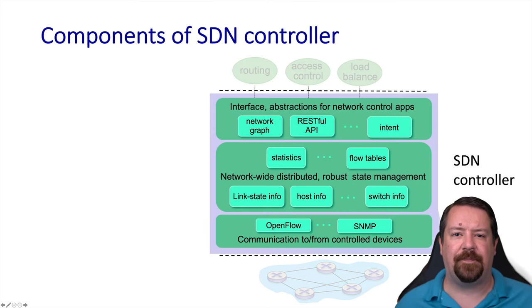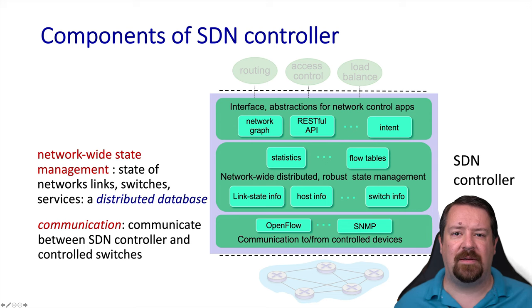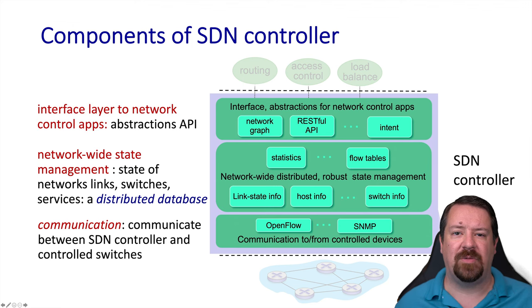Let's break down the SDN controller in more detail. In general there will be modularity and a set of concerns the controller must deal with. The controller will have components dedicated to communicating with switch devices, for example using the OpenFlow protocol and possibly the SNMP protocol as well. The controller also needs to track network state — what physical links are connected, which switches are registered, what flow tables have been published to switches, and statistics about device usage and traffic flows. Then there's the API for interfacing with network control applications, which might provide a network graph abstraction, a RESTful API, and some notion of policy intent.